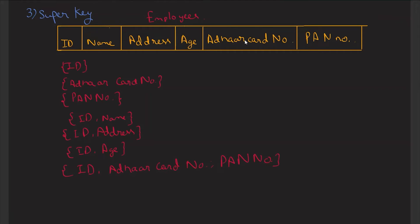All those sets of keys will be called super keys. A super key consists of supersets of all the attributes that will uniquely identify the records of the table. You can also say that a super key is a superset of a candidate key. From the super key we can take ID as the primary key and Aadhaar card number and PAN number as candidate keys, and the rest come under super keys.